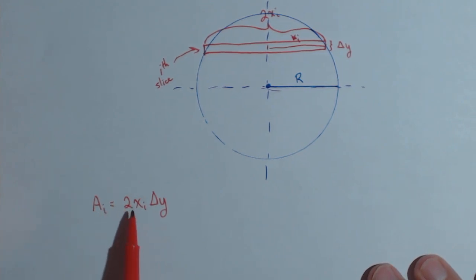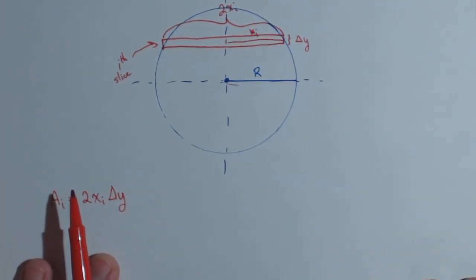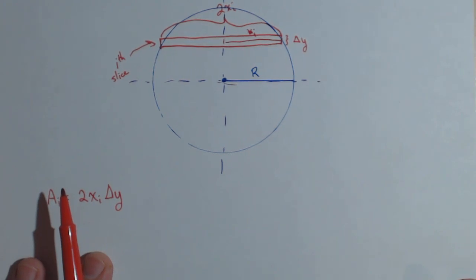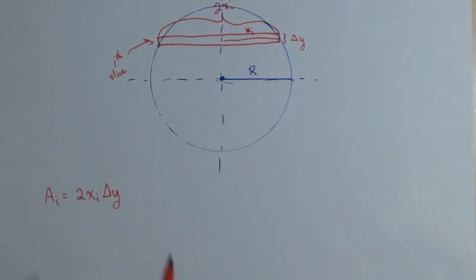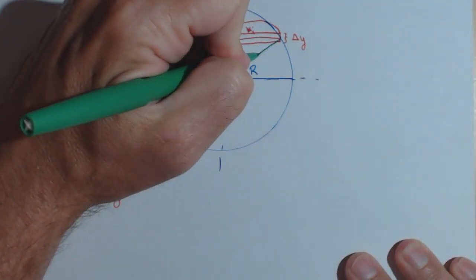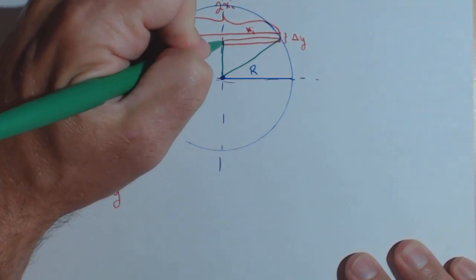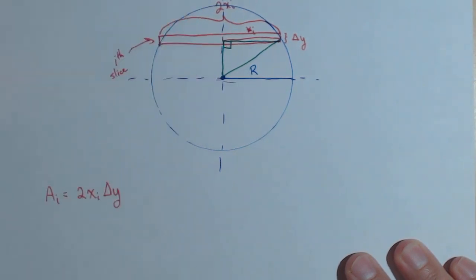At this point we have both x and y in the expression, and we don't want both variables in there. So we need to come up with a relationship between x and y. If I drop in a vertical line and a horizontal line, I've got a right triangle.